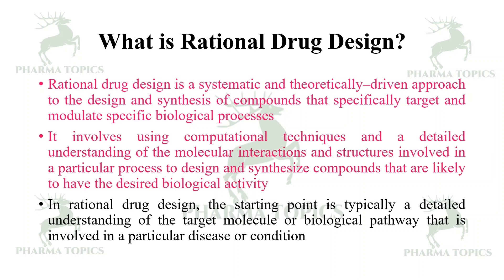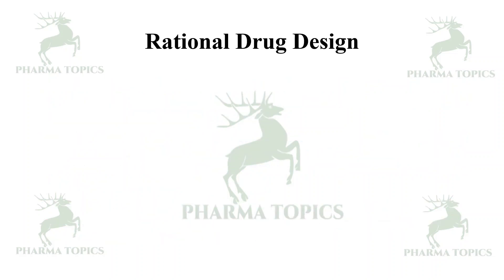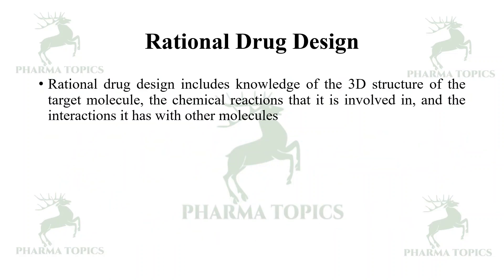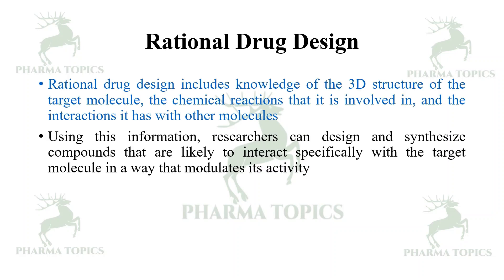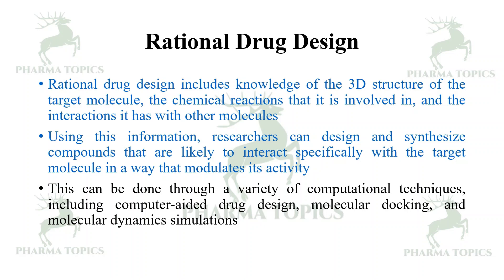In rational drug design, the starting point is typically a detailed understanding of the target molecule or biological pathway involved in a particular disease or condition. It involves knowledge of the 3D structure of the target molecule, the chemical reactions involved, and the interactions it has with other molecules. Using this information, researchers can design compounds likely to interact specifically with the target molecule.